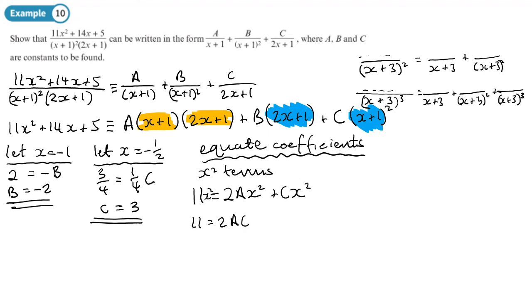So 11 equals 2a plus c. I suppose I could have said from there that 11x squared is equal to 2ax squared plus cx squared like that. So I can say 11 equals 2a plus c. Now I've worked out c. So 11 equals 2a plus 3. Take away 3 from both sides, 8 equals 2a. So a equals 4.